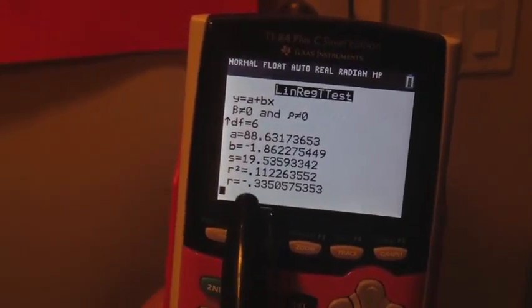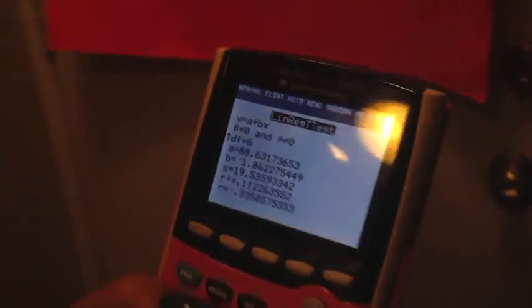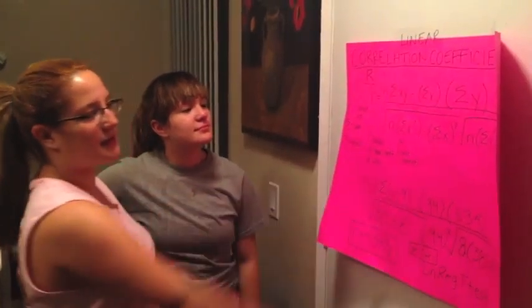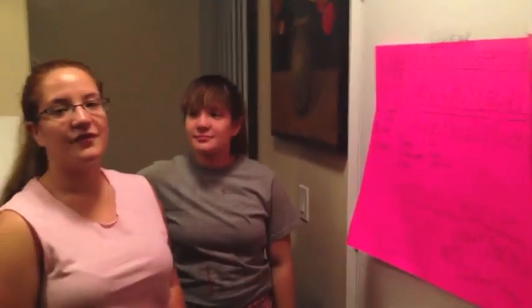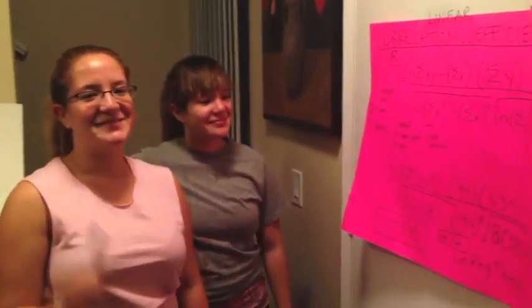So r equals negative 0.335, and so on. This is how you calculate the linear correlation coefficient for r for elementary statistics. Oh, now I understand. Bye.